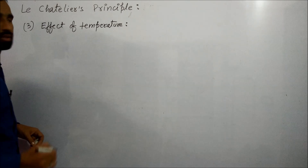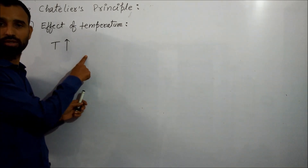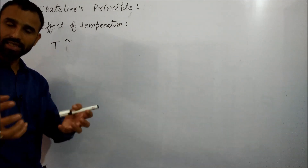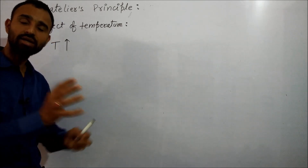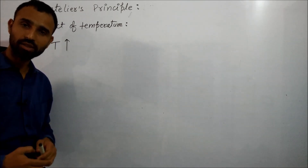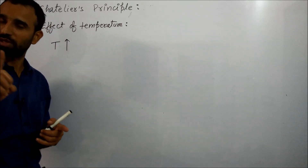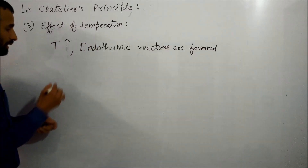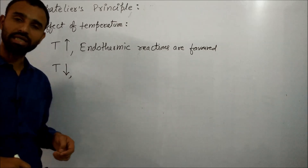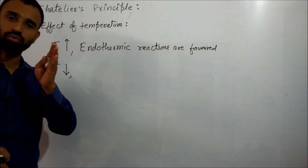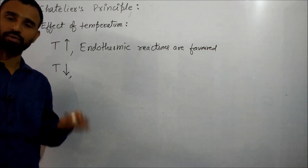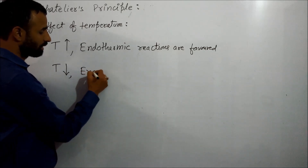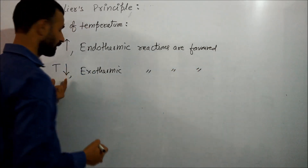The third factor is the effect of temperature. When we increase the temperature, heat content increases. As heat content increases, equilibrium shifts to that side which absorbs the heat — that is, the endothermic reaction. So endothermic reactions are favored by increasing temperature. If we decrease the temperature, heat content decreases, so the reaction that releases heat — the exothermic reaction — is favored. Exothermic reactions are favored on decreasing temperature.